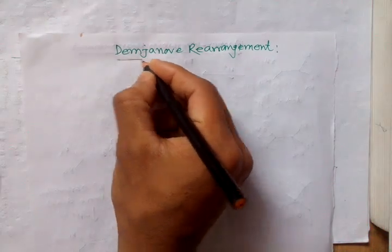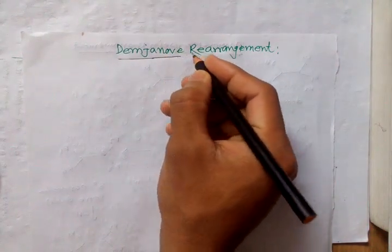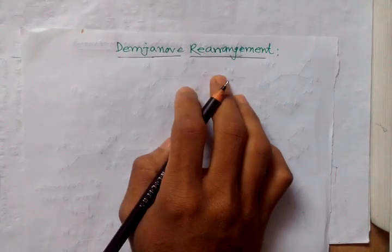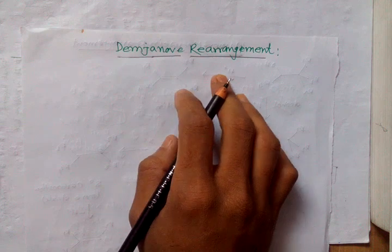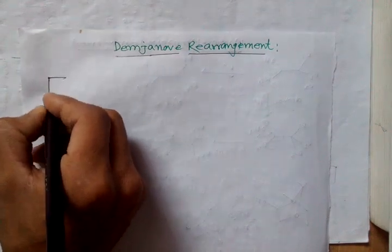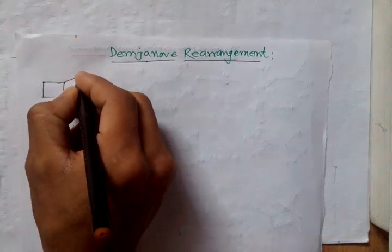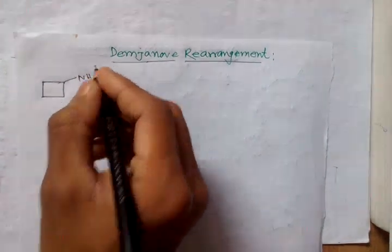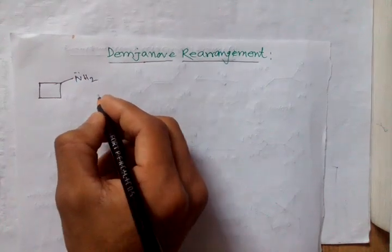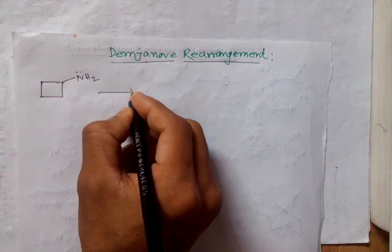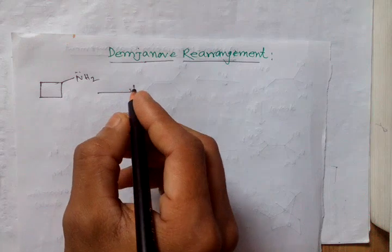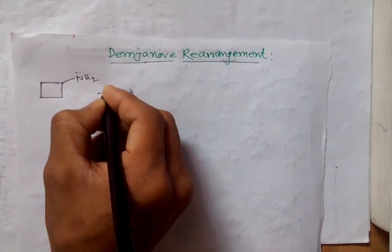Hello friends, today I am going to discuss the topic Demjanov rearrangement. It is a chemical reaction where primary amines are converted to rearranged alcohols by the treatment of nitrous acid.